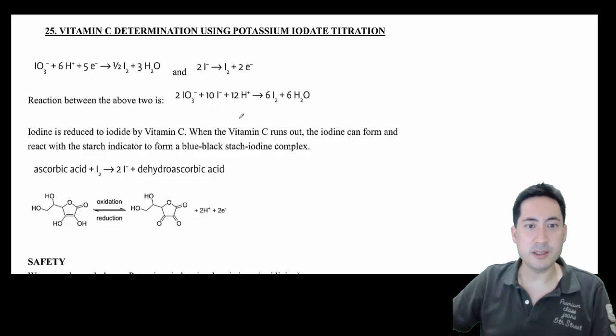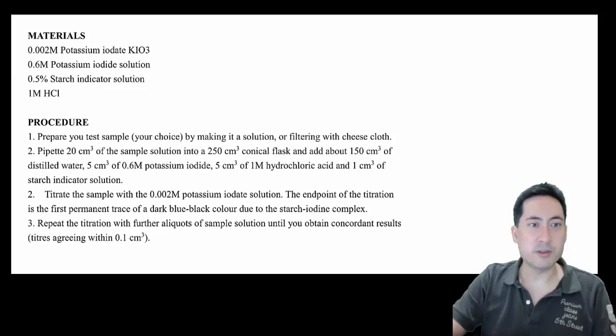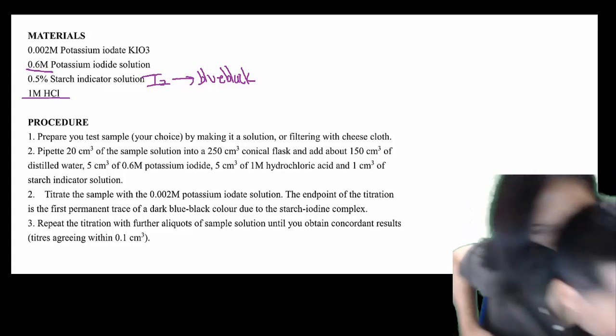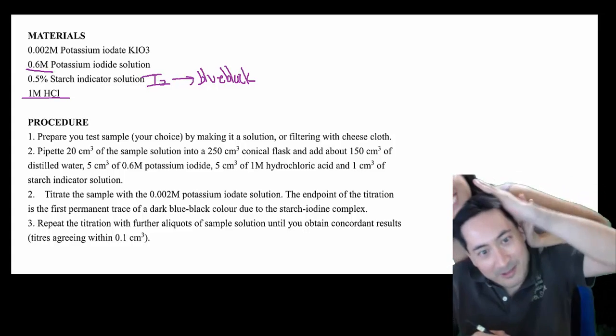I think it's easier just to go to the actual method, and so what we have here is potassium iodate, potassium iodide solution, look how strong that is, some starch solution. Now starch plus iodine makes the blue-black solution, and it's acidified. Okay, my wife is annoying me and she's not letting me do this video, so I don't care, I'm doing it anyway.